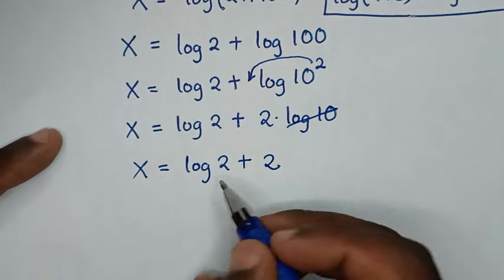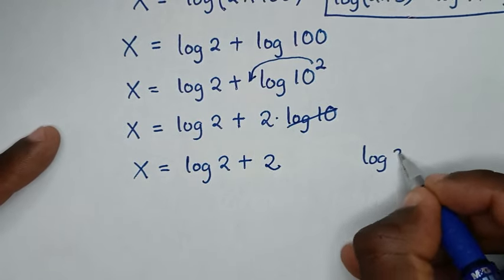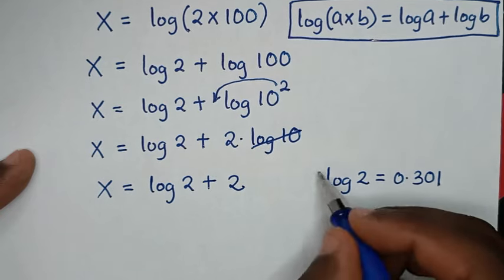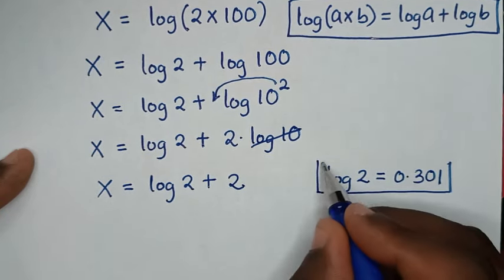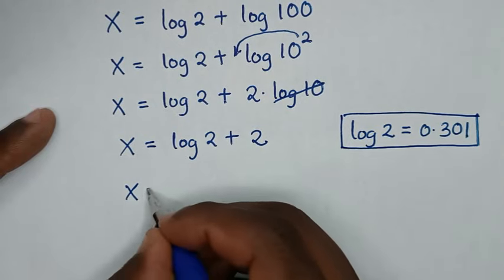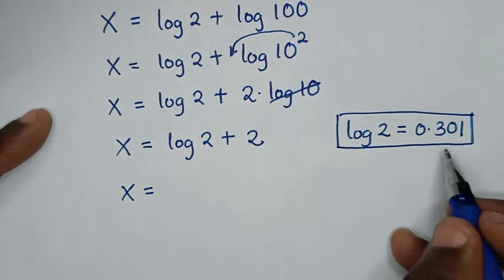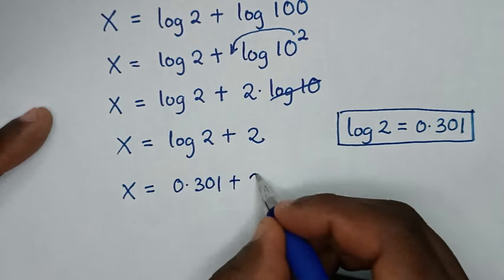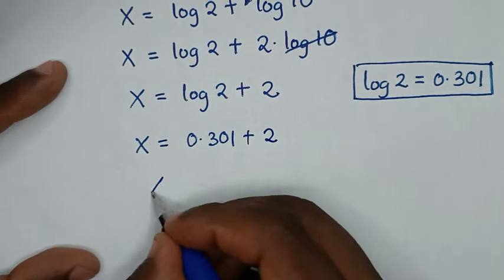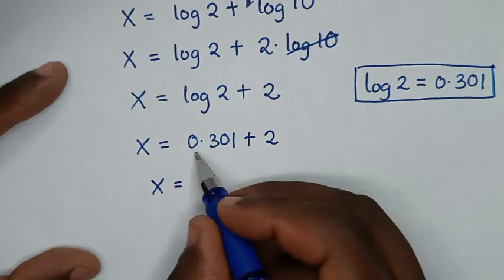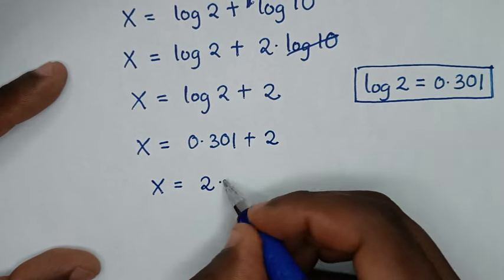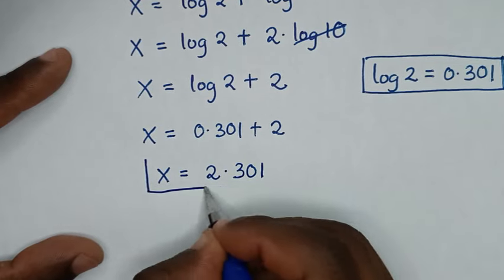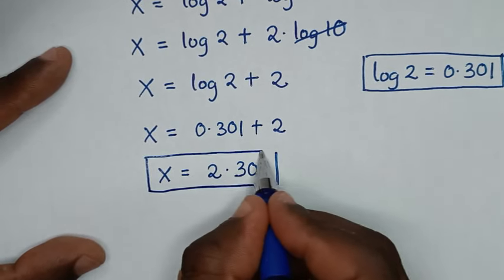From this, log of 2 — we know that log of 2 is equal to 0.301. So x is equal to 0.301 plus 2, which is 2.301. So this is the final answer for the value of x in this problem.